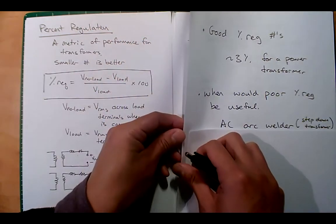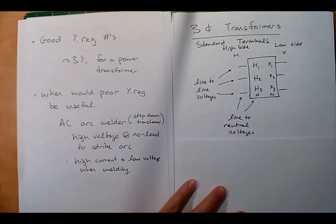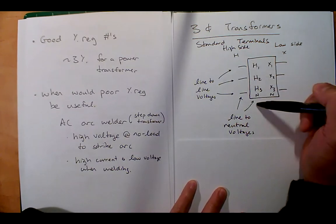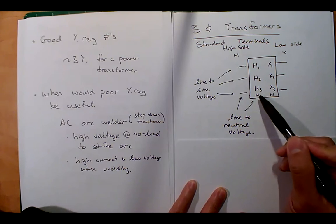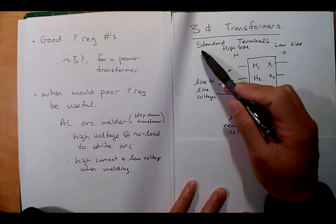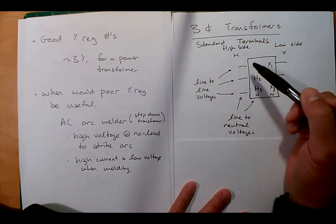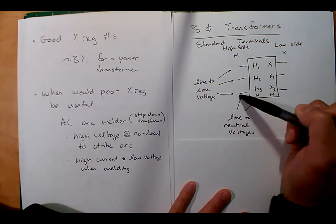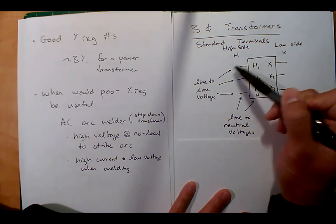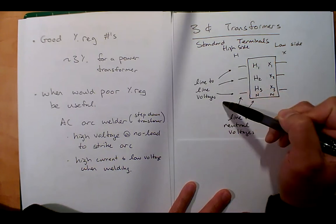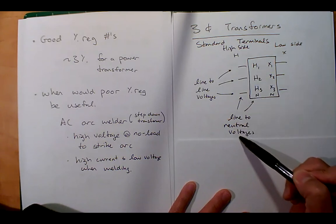Let's start a discussion on three-phase transformers. A three-phase transformer is going to have three to four input wires and three to four output wires — three to four because you could have an extra neutral depending on whether it's a Y or a delta. The standard terminal notation is H for the high side and X for the low side. The voltages between H1 to H2, H2 to H3, and H3 back to H1 are called our line-to-line voltages.